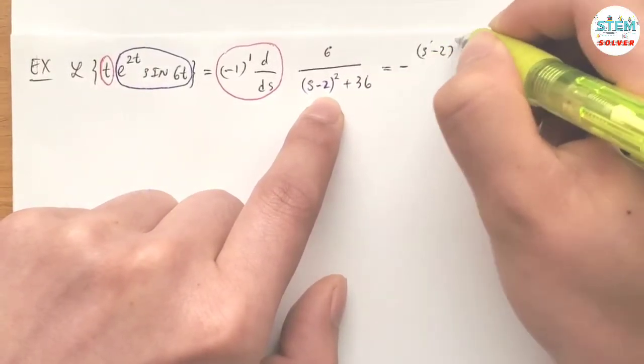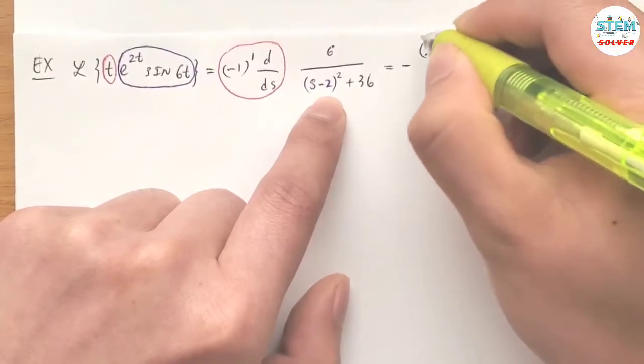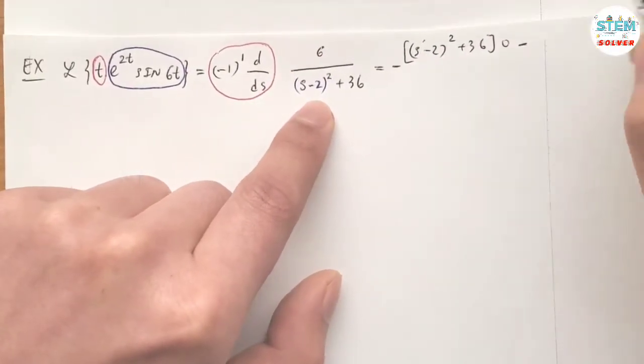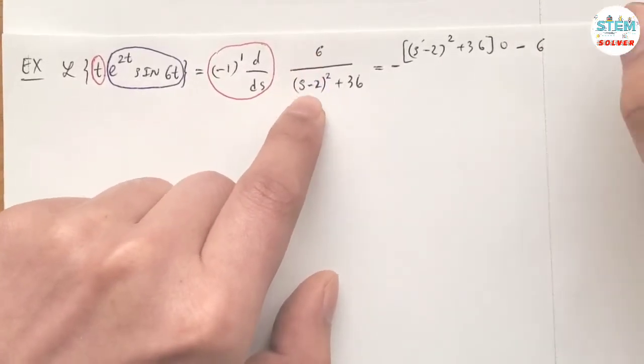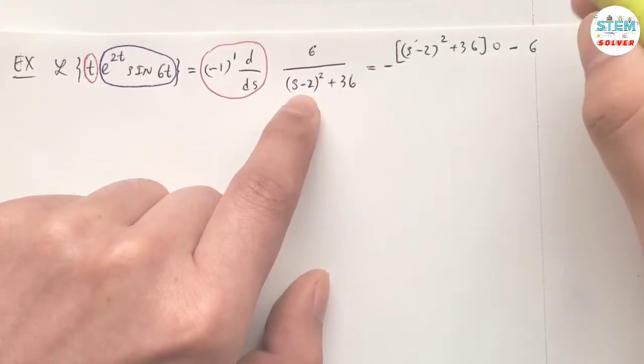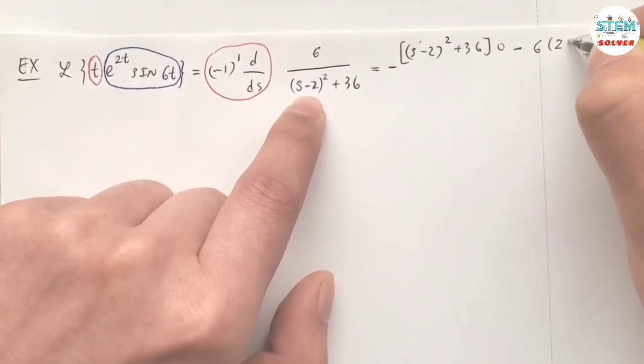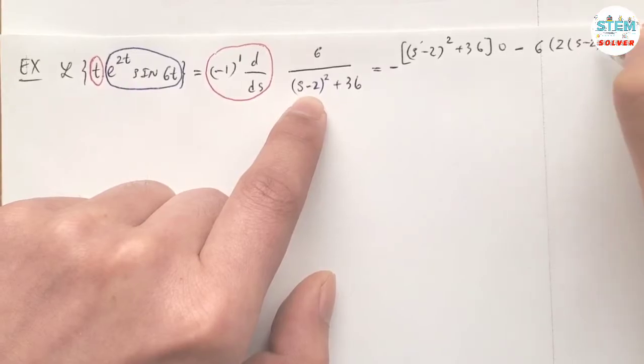Let me write it down if you cannot see it. Times 0, derivative of 6 is 0, minus, here you can see it. The top times the derivative on the bottom, and the derivative on the bottom is 2 times 6, times 2 times s minus 2.